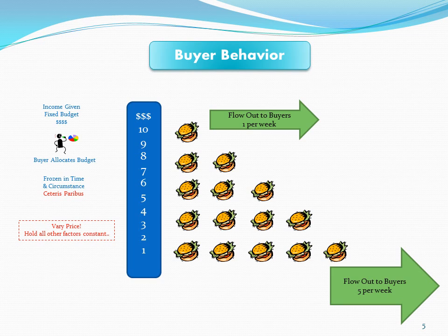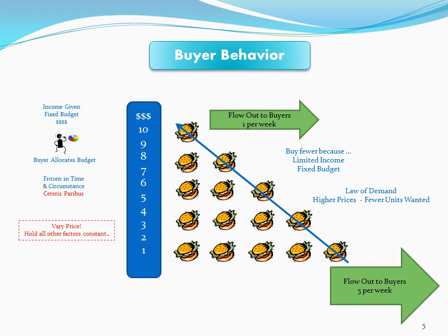We have the typical behavior of a buyer: as prices rise, buyers buy fewer units — they demand fewer units because their budgets are fixed. And this happens with every product and every consumer. The blue line here represents the demand curve for a product, and we say this represents the law of demand. It's a law because it always happens — like gravity. You drop an apple, it hits the ground. It's not violated.